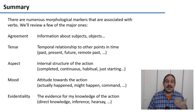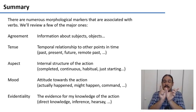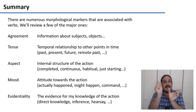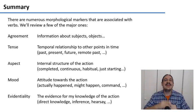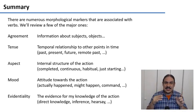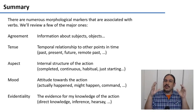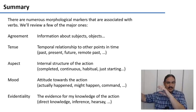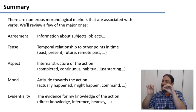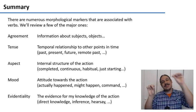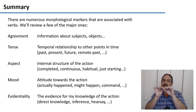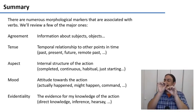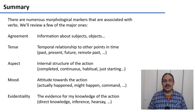For example, we can have agreement, where there's information on the verb about who's doing the action, and maybe who the action is being done to. We can have tense, which is the temporal relationship of the action to other points in time — maybe our action is in the past, or in the future, and so forth.